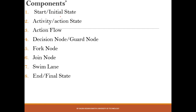An activity diagram has a number of components, and we'll discuss each in detail. They are: the initial state, the activity or action state, the action flow, the decision node or guard node, the fork node, the join node, the swimlane, and finally the end or final state.